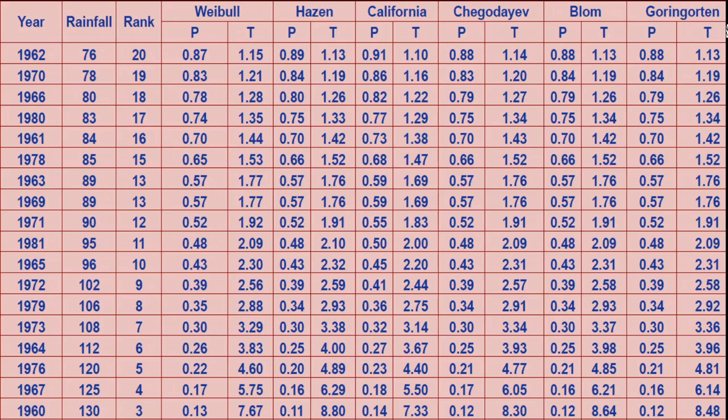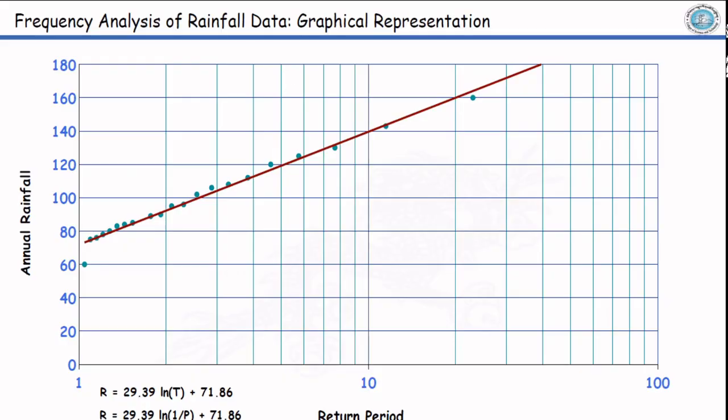Likewise, once you calculate the probability, return period is just the inverse of probability. And likewise, you can plot a semi-log chart with rainfall magnitude on y-axis and time period on the x-axis. In fact, the return period on x-axis. You can simply fit a line. Since it is a semi-log paper, we will get a logarithmic equation.